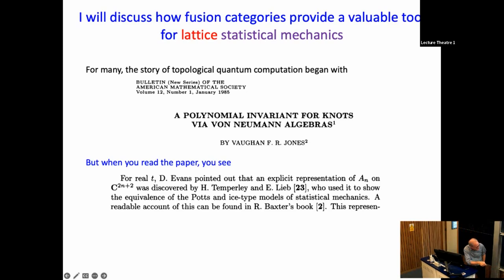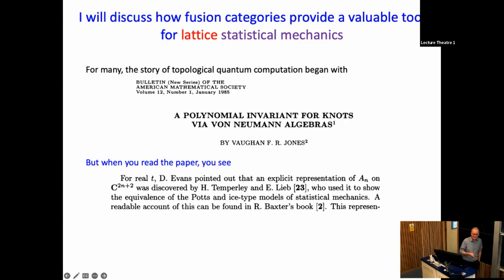I expect everyone to know the Temperley-Lieb algebra, so I'm not going to use it except inspirationally. But many people, based on my past experience, don't know what Temperley and Lieb were actually doing at the time, and why they wrote down this algebra that Vaughan then rediscovered and used to spectacular effect.